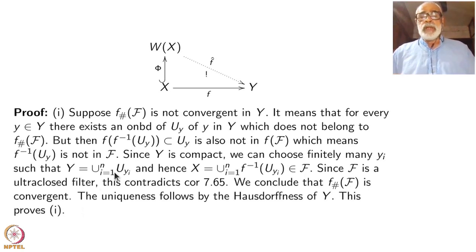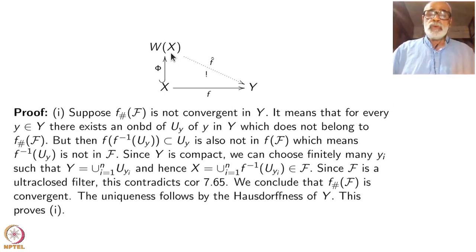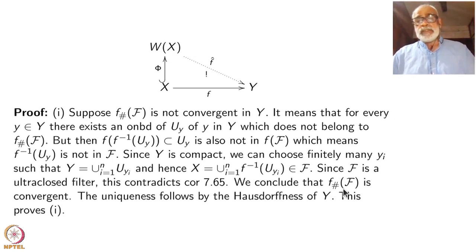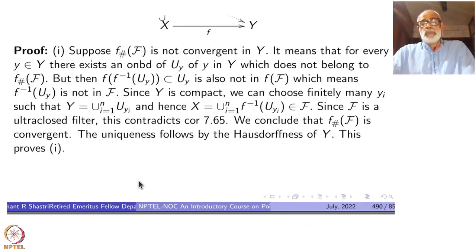Note that we are not proving f-check is an ultra-closed filter — that is not needed and is not true in general, not even that it is a closed filter. We go back to x, do the work there, and conclude that the image filter must be convergent. Uniqueness of convergence follows because y is Hausdorff. That is an extra assumption. This proves statement 1.